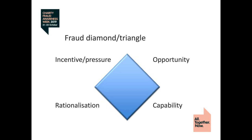Any fraud risk management policy, strategy, guidelines, or protocols must therefore aim to close up available opportunities, reduce the pressures, eliminate rationalization, and where possible, reduce the chances of exploiting capabilities. One must therefore understand how these factors interplay in the organization in order to create an effective approach to combat fraud and corruption.